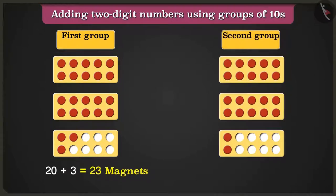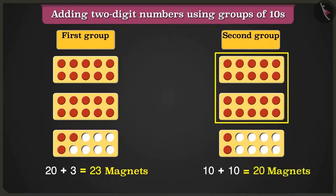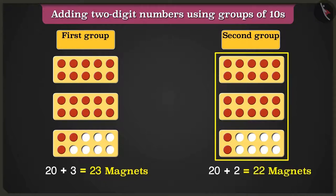In the next group of tens frame, adding 10 and 10 makes 20, and adding 2 more will be equal to 22 magnets.